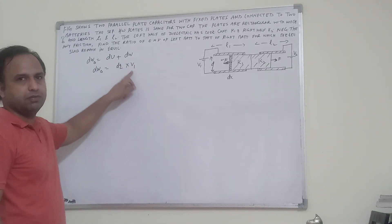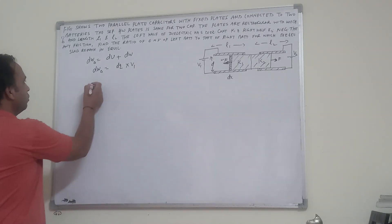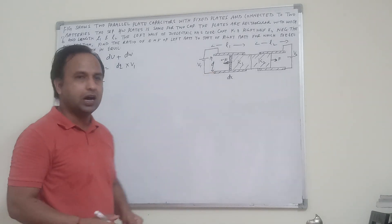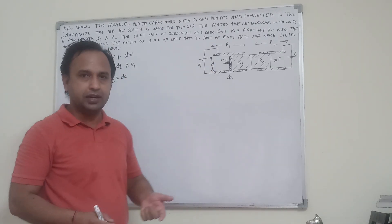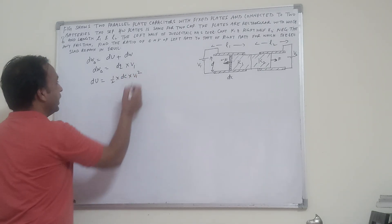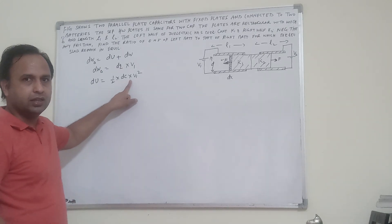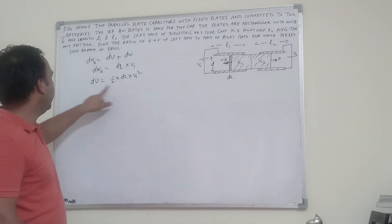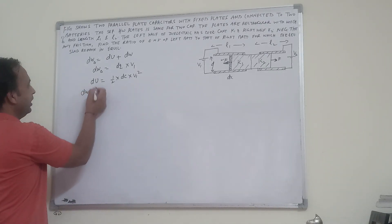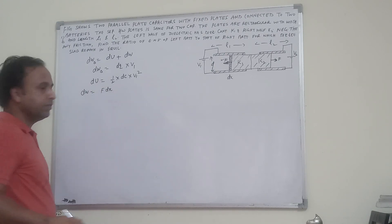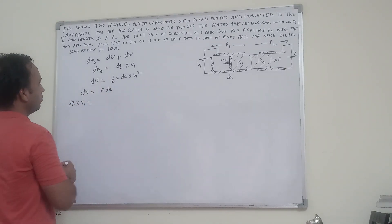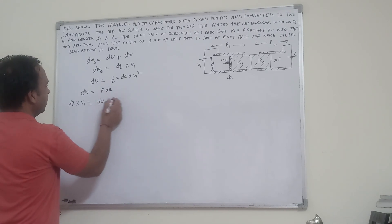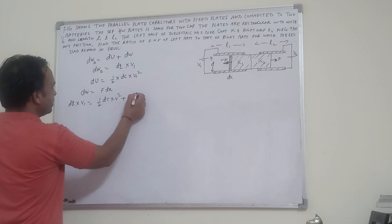The charge potential difference dq changes energy as half C dC into V1 square. The work done W is F into dx. So dq into V1 is equal to half dC into V square plus F dx.